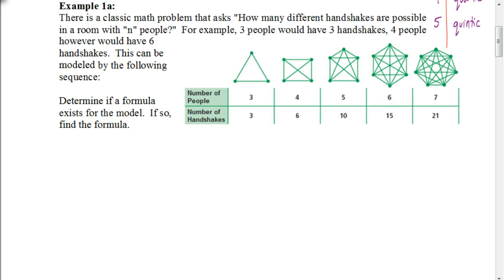We want to determine a formula, if a formula exists for this model, and if so, find it. Then we can figure out — for example, if we have a classroom of 30 students — how many total different handshakes there would be. To find out if it's possible to create a polynomial model for this situation, we use the finite difference theorem.